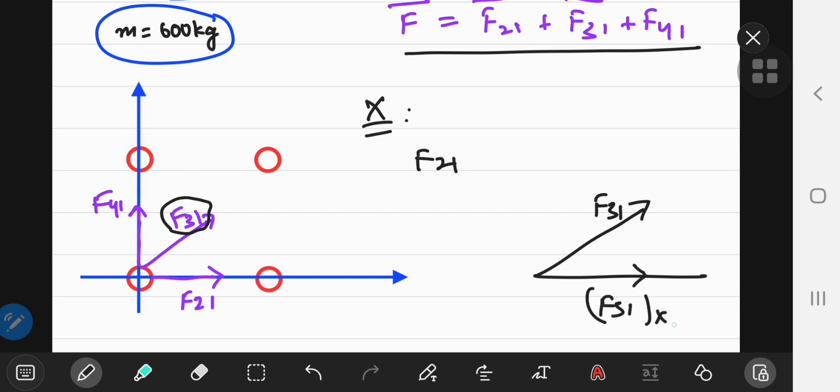So we're going to need its horizontal component, F sub 3, 1, sub x. And obviously later, we're going to need its vertical component, F sub 3, 1, y.